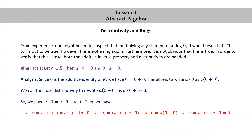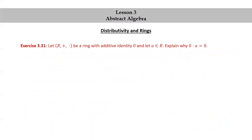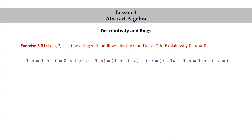As an exercise, let (R, +, ×) be a ring with additive identity 0 and let a be in R. Explain why 0 × a = 0. This is very similar to what we just did — pause the video and try it yourself. The answer: 0 × a = 0 × a + 0 = 0 × a + (0 × a − 0 × a) = (0 × a + 0 × a) − 0 × a = 0 + 0 × a − 0 × a = 0 × a − 0 × a = 0. The properties used at each step are essentially the same as the previous example.